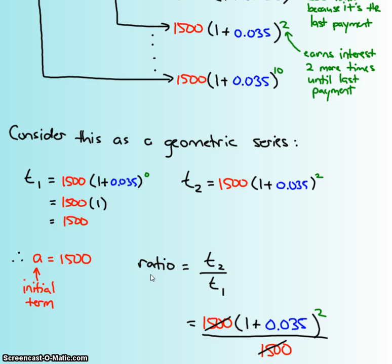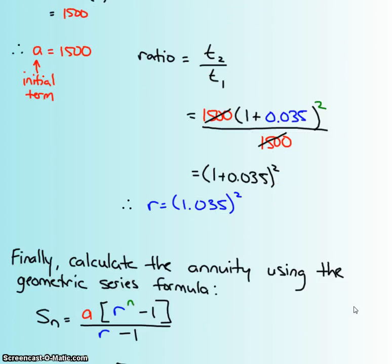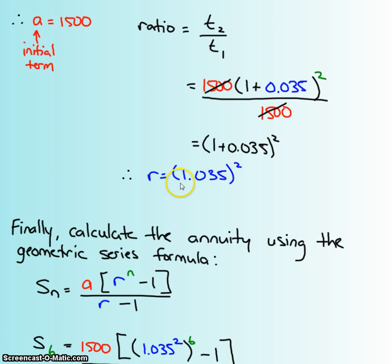So what's multiplying each time? I took t2 divided by t1, and let's see what I got. So it looks like the r is about 1.035 to the power of 2, and I guess you could evaluate that if you really wanted to.